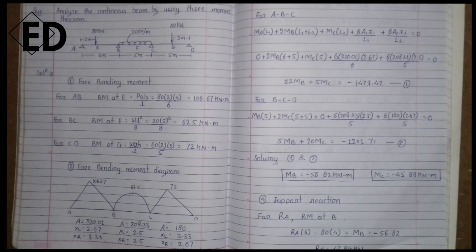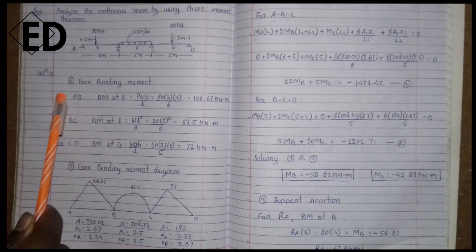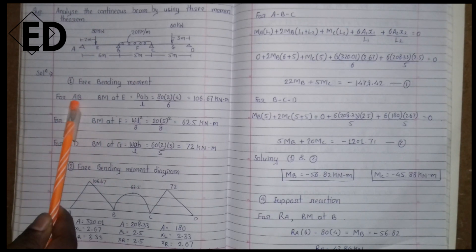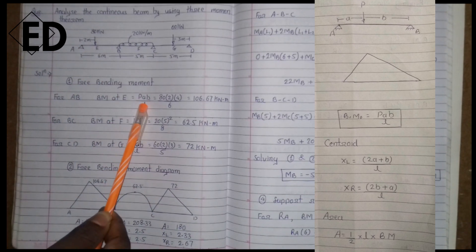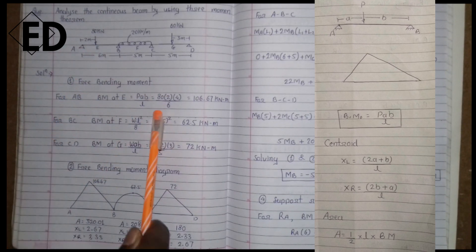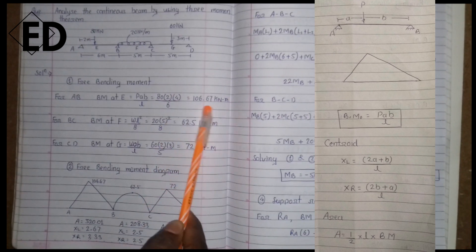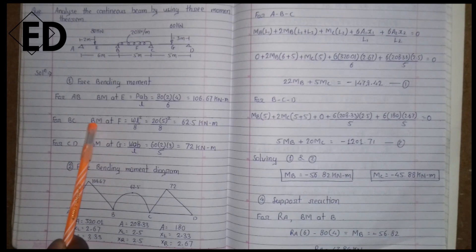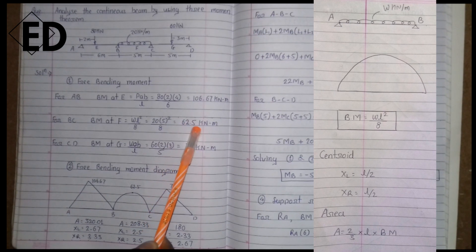While solving the three-moment theorem, the first step is the calculation of the free bending moment. There are three spans: AB, BC, and CD. For span AB, the bending moment is P·a·b/L, where 'a' is the distance of the point load from A and 'b' is the distance from B. Putting in values: 80×2×4/6, we get 106.67 kN. For span BC, the bending moment at F equals wL²/8; putting in values, we get 62.5 kN·m.